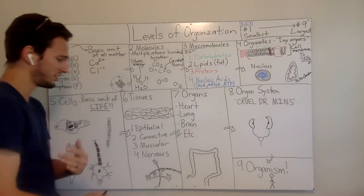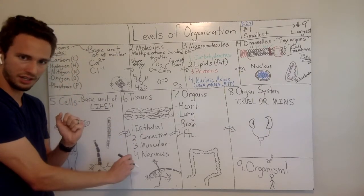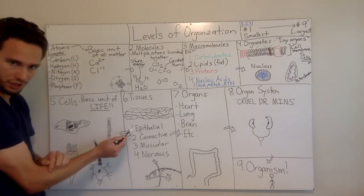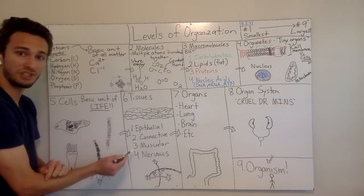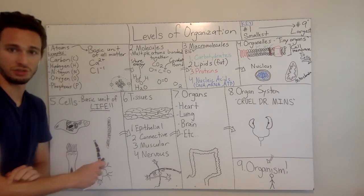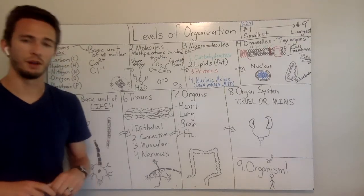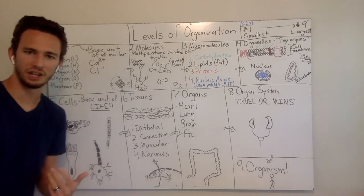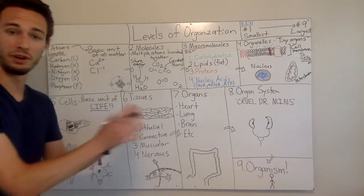So the four main types of these are epithelial, connective, muscular, and nervous tissue. These are all different types of tissue. And we'll go through the individual ones probably here in a later episode.